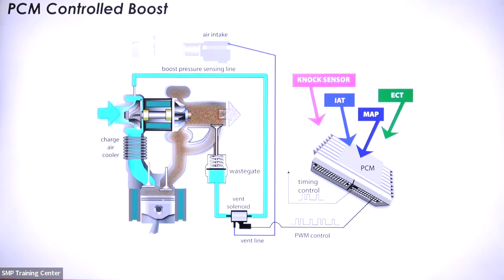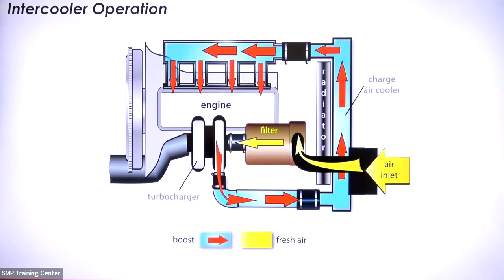Regardless of what type of turbo system you have, we have to have a charge air cooler. The intercooler, or charge air cooler, removes the heat generated by compressing the air. We're compressing a ton of air at 100,000 RPMs, so we have to be able to remove that heat. Intercoolers can be easily contaminated with oil if the engine has a problem, and the seams can also separate causing a leak. Any leak on the pressure side has a large impact on boost.